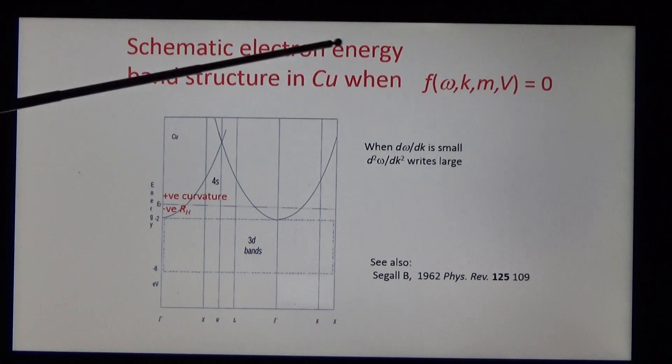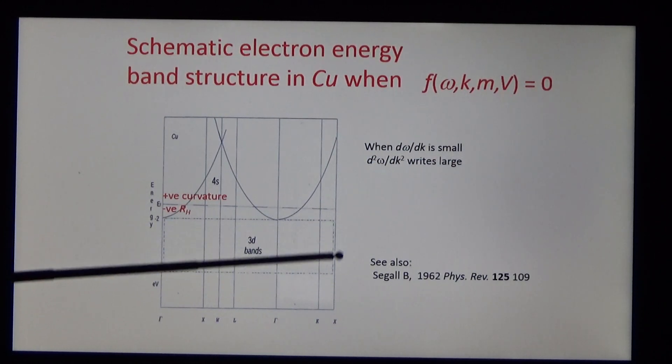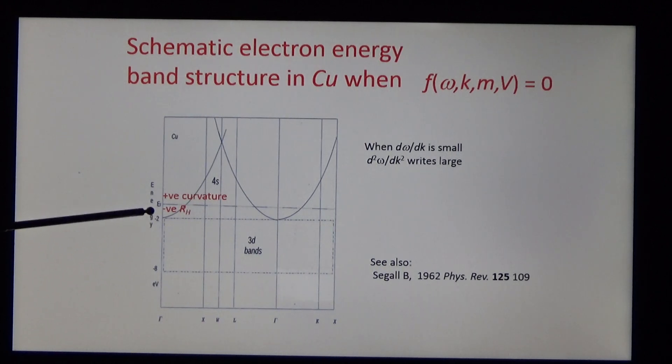Copper is the metal with the highest conductivity. Here are the 3D valence bands and above them the 4S bands are paradoxical. They pass through the Fermi level where the curvature is positive and the Hall coefficient is negative.